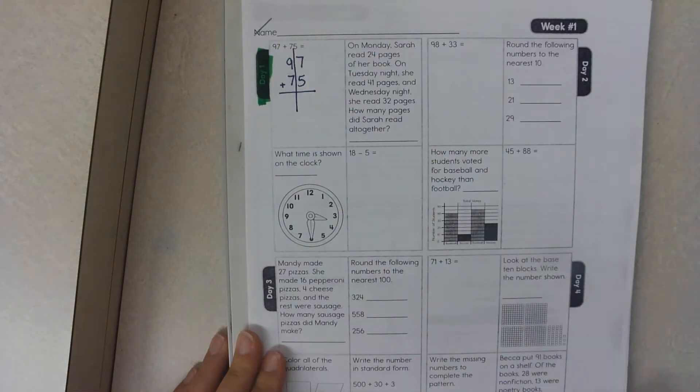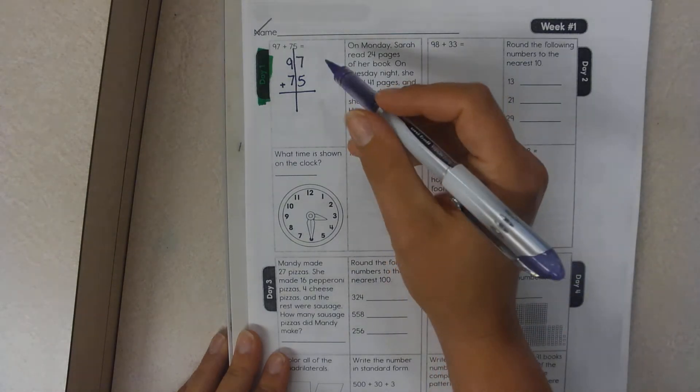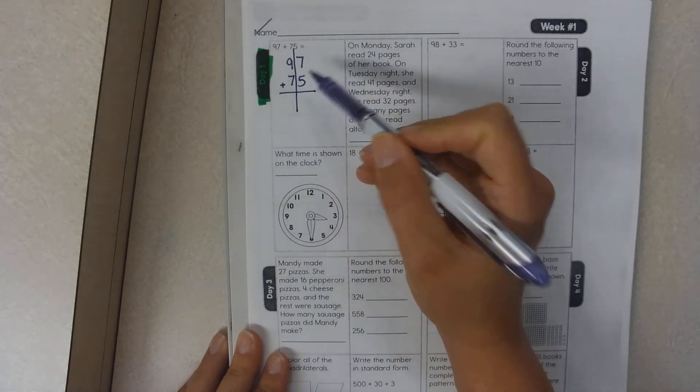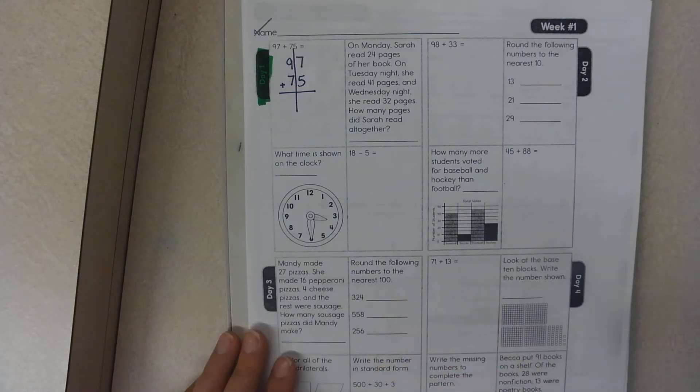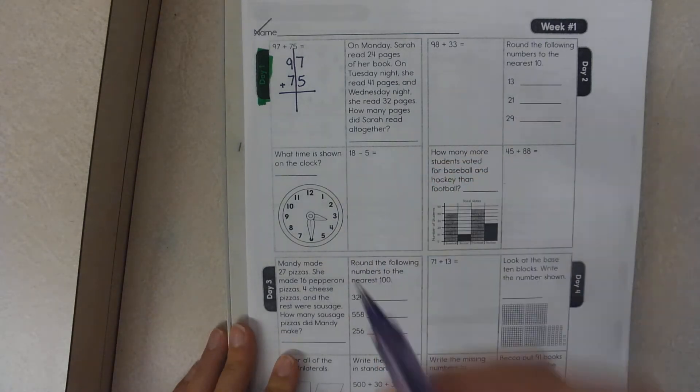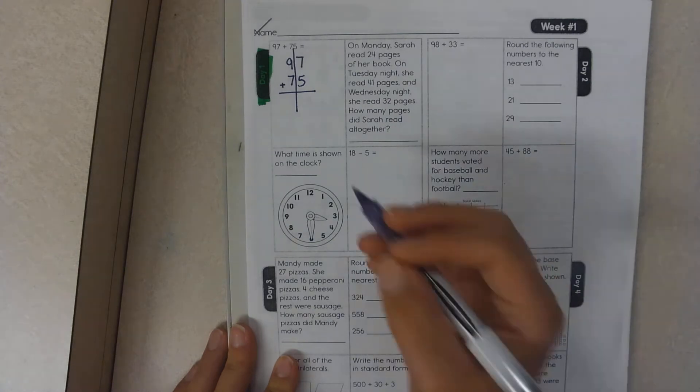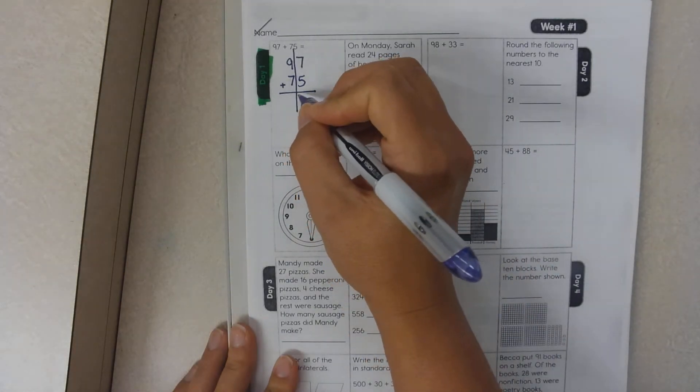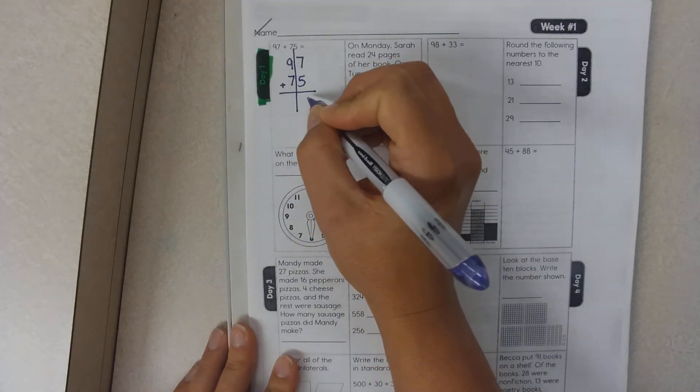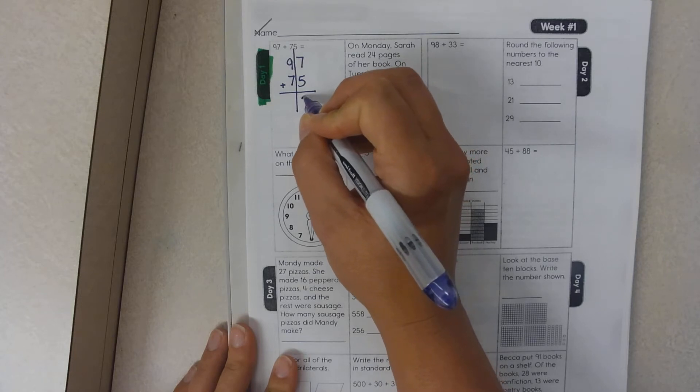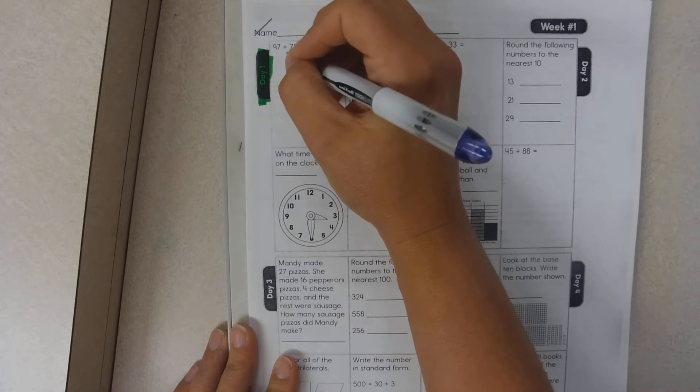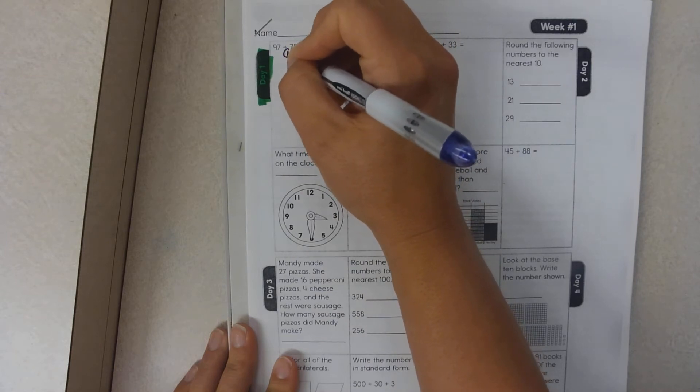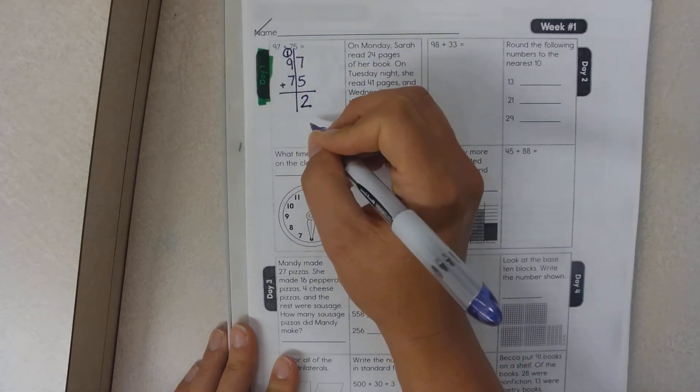Separate your ones and your tens. Seven plus five. What is seven plus five? It is 12. There are two ways you can do this. You can just write the number 12 here or you can put your two in the ones place and carry your ten because 12 has one ten and two ones.